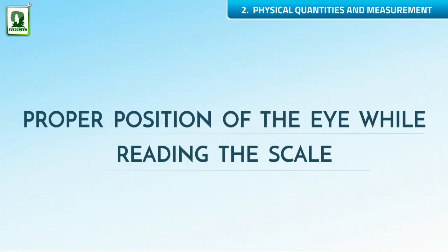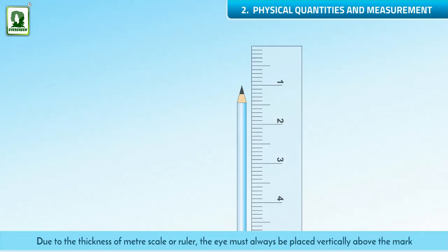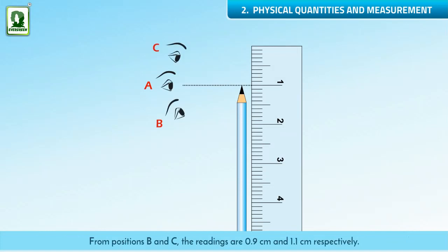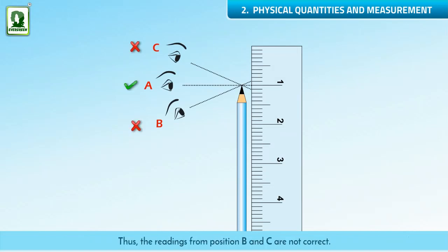Proper position of the eye while reading the scale. Due to the thickness of the meter scale or ruler, the eye must always be placed vertically above the mark being read, in order to avoid error due to wrong position of the eye. The correct position A of the eye gives a reading of 1.0 cm. From positions B and C, the readings are 0.9 cm and 1.1 cm respectively. Thus, the readings from positions B and C are not correct.